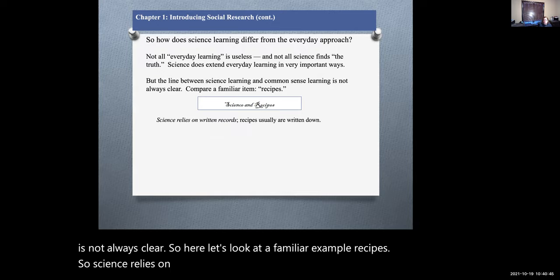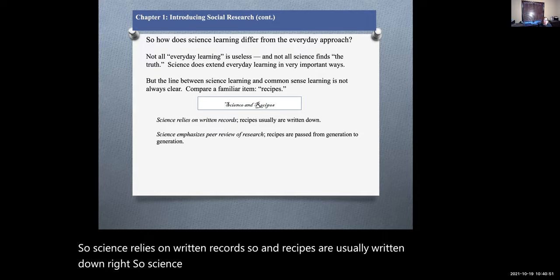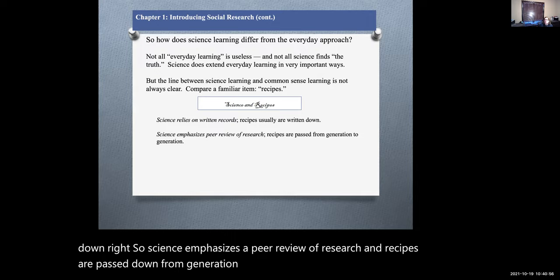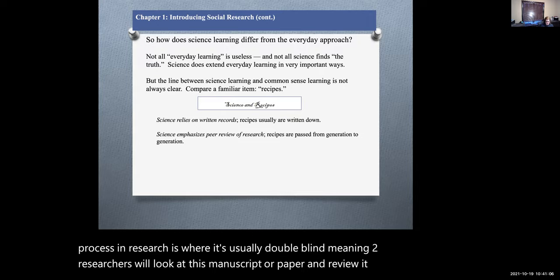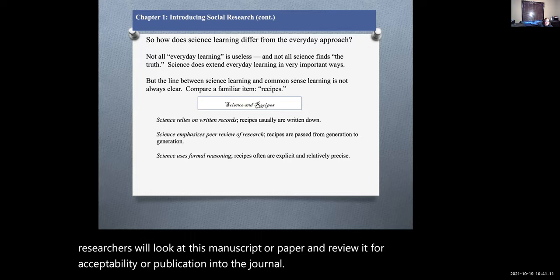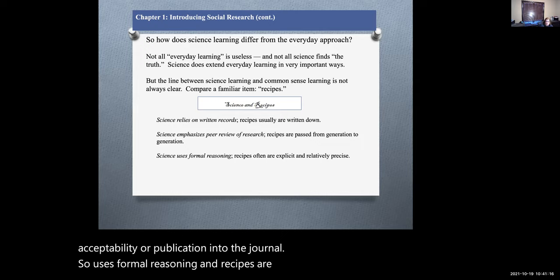Science relies on written records, and recipes are usually written down. Science emphasizes a peer review of research, and recipes are passed down from generation to generation. The peer review process in research is where it's usually double blind, meaning two researchers will look at this manuscript or paper and review it for acceptability for publication into the journal. Science uses formal reasoning, and recipes are often explicit and relatively precise.